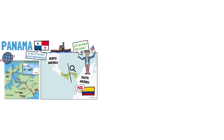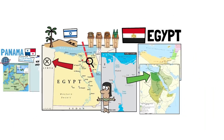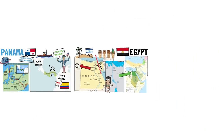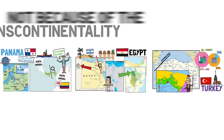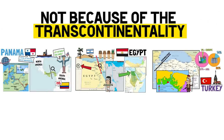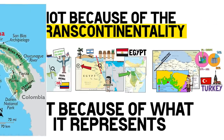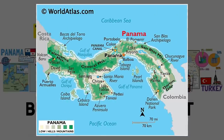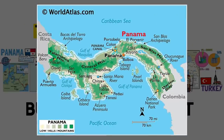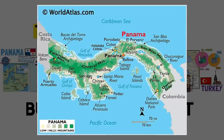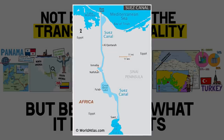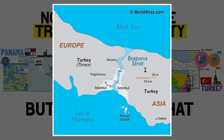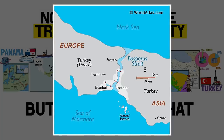In the three initial cases, the transcontinental feature is incredibly important for these countries — not because of the transcontinentality itself, but because of what it represents. In Panama's case, the existence of the Panama Canal. In Egypt, the Suez — although they would still control the canal even without holding the Sinai. And with Turkey, the control of the Bosporus Strait and its military and commercial importance between the Black and Mediterranean seas.